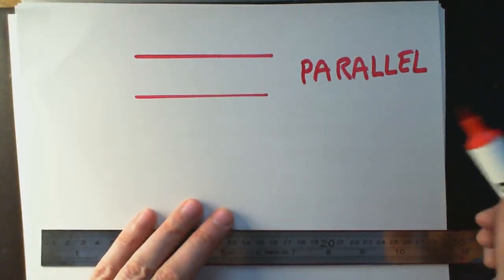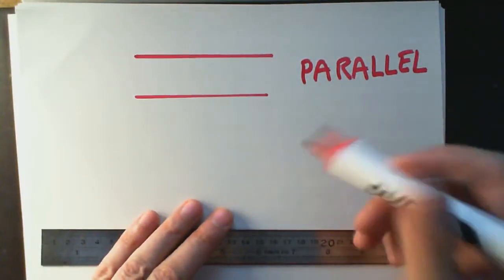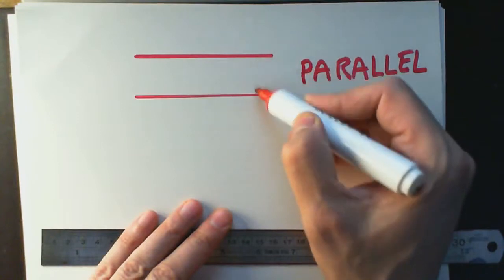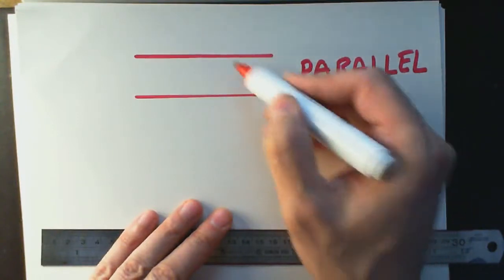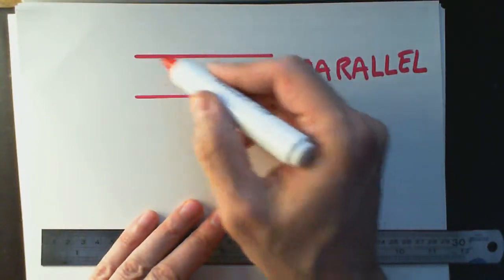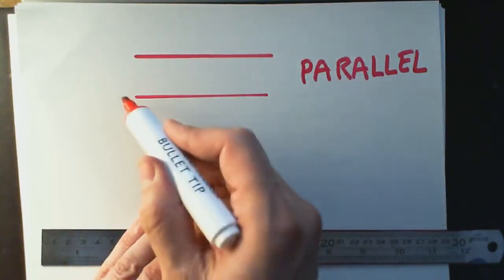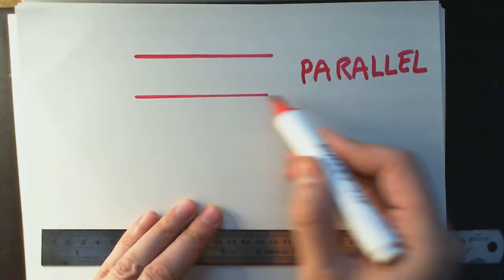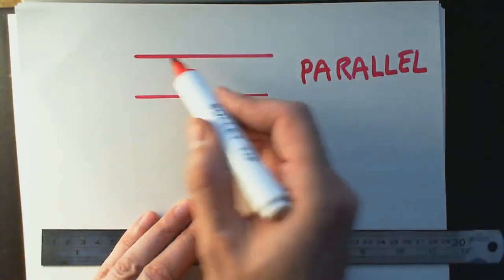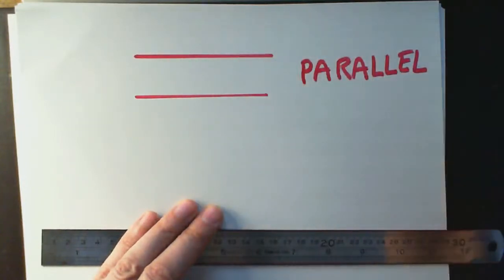Why do we say they're parallel? They're parallel because they are always the same distance apart. And so of course, if we were to continue these lines on, then they would never meet — they would never touch each other.